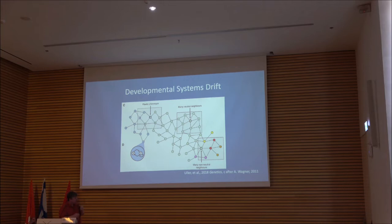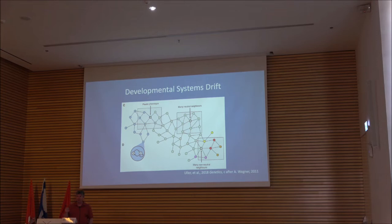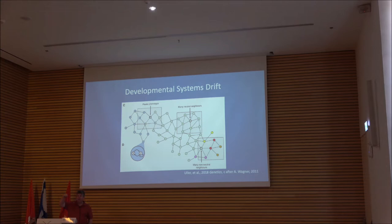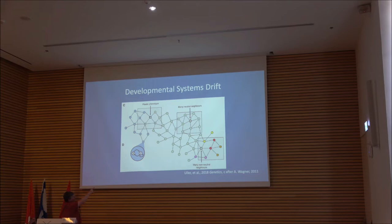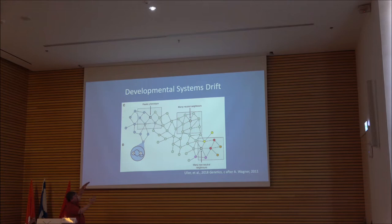Almost inherent in any evolutionary network is the possibility of neutral network structures, so that the network can change — perhaps significantly — without actually changing the output. Many gene regulatory networks can be very labile at the network structure level, yet produce the same output developmentally and morphologically. That often is the case because you have a large neutral network in which you can have a single change within the structure of the network which still produces the same output. The size of those neutral nets can in fact be huge.